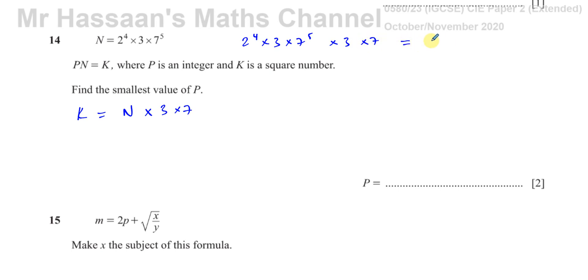If I multiply this by 3 and multiply it by 7, I'm going to end up with 2 to the power of 4 times, and we have to add the powers, 3 to the power of 2 times and 7 to the power of 6. All of them are even powers.